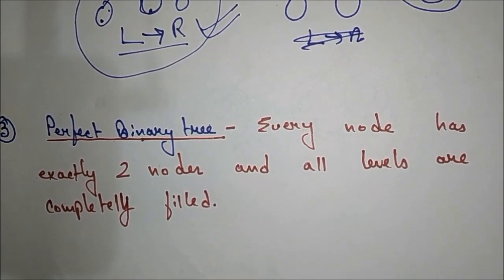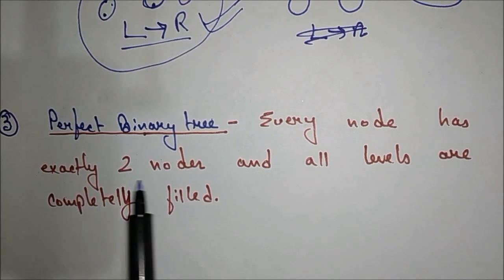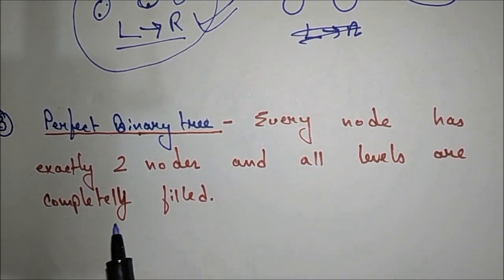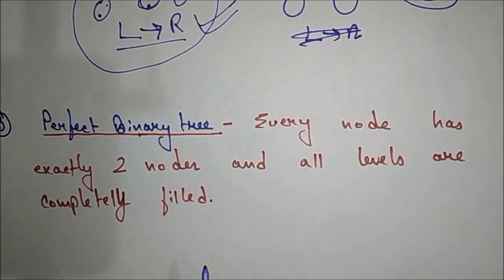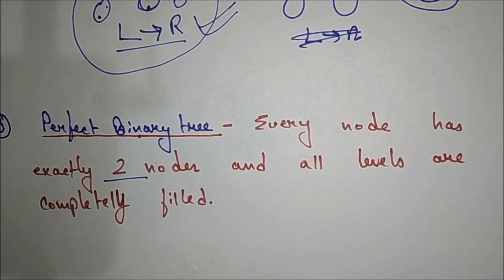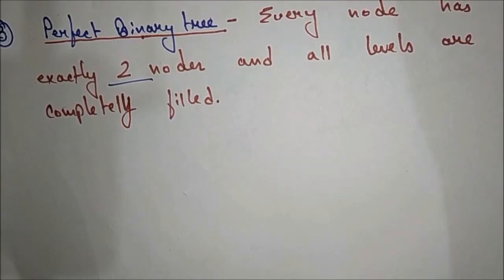Now we will see the last type: the perfect binary tree. In a perfect binary tree, every node has exactly two children and all levels are completely filled.